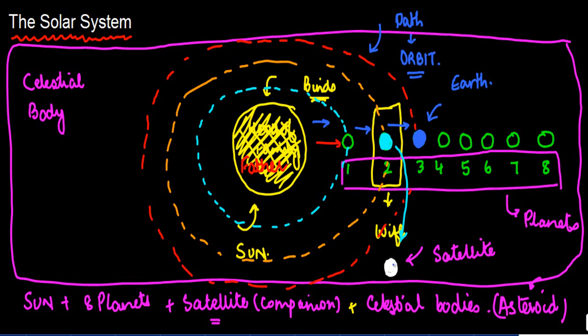What is the work of the satellite? The satellite is going to keep on revolving around the planet, just like the planet revolves around the Sun.